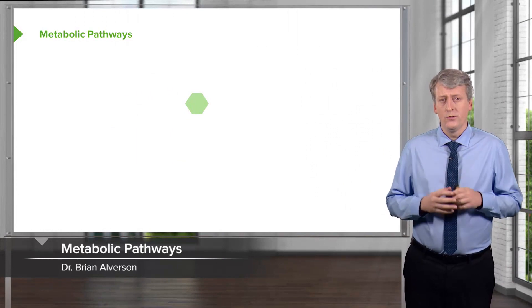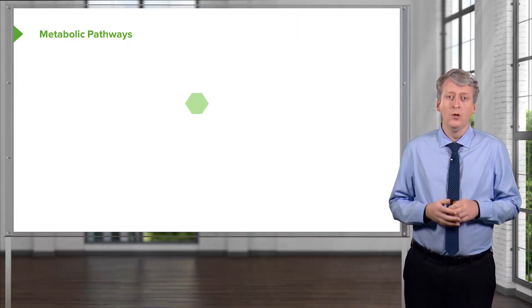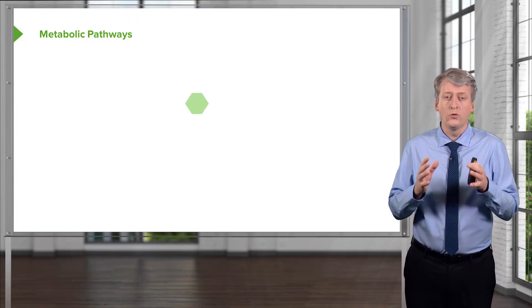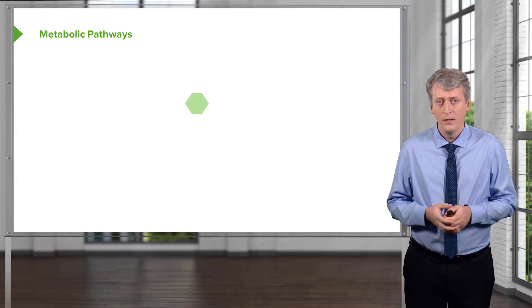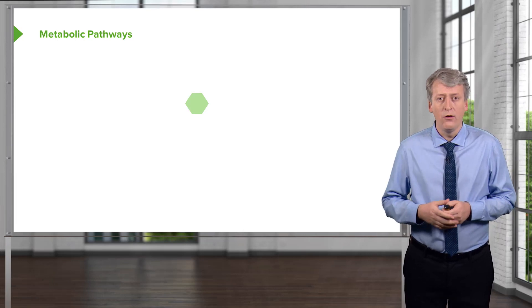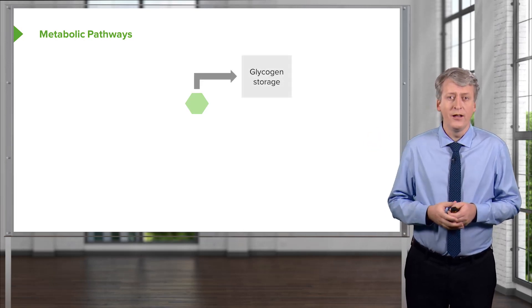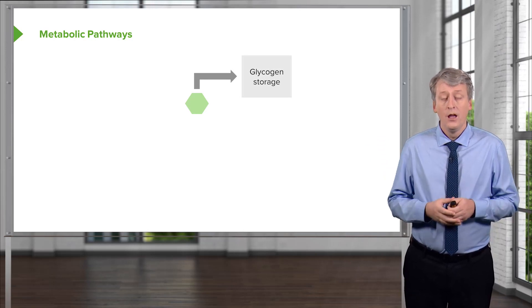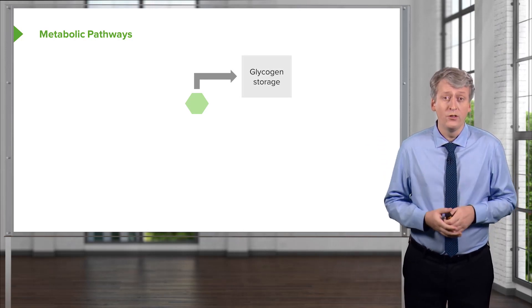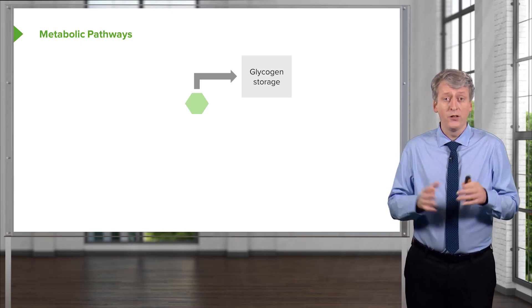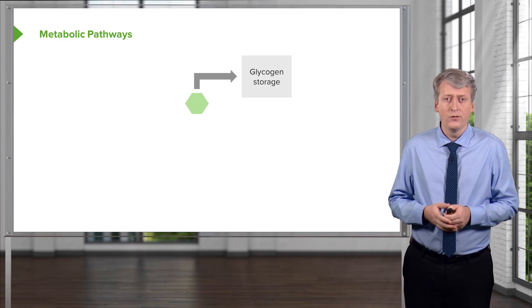Here is glucose — this is the essential building block with which we create all the energy we need to run our bodies. As you recall from biochemistry, glucose will be stored in the liver as glycogen. Patients can have problems with storage of glycogen, and this family of metabolic disorders are glycogen storage diseases. We'll talk about those.